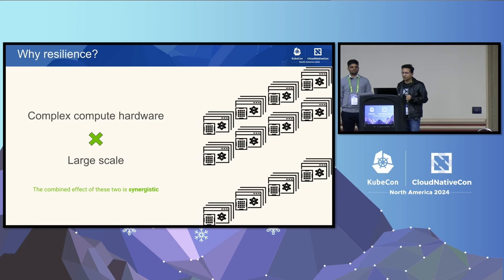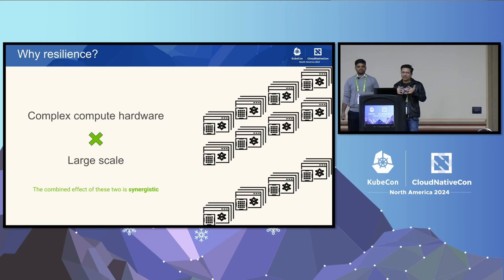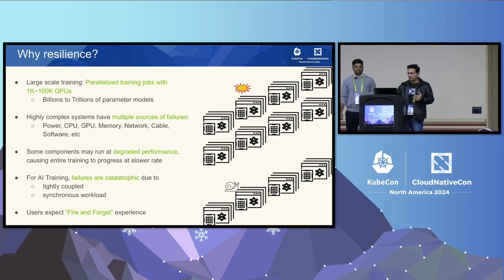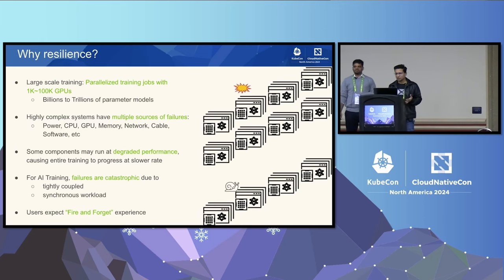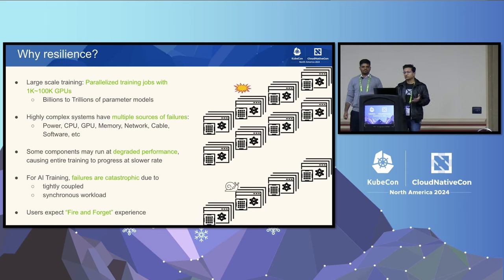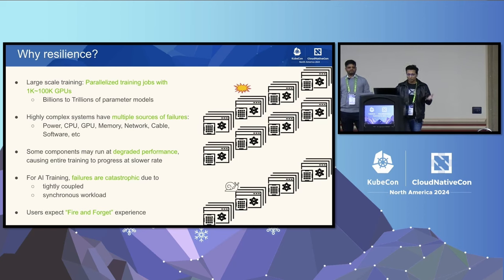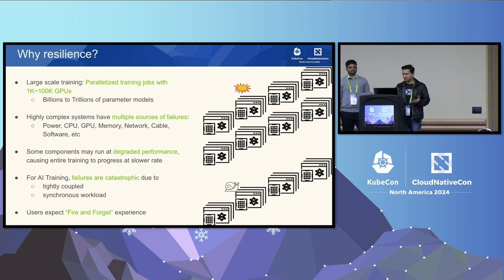When you combine complex hardware with scale, the combined effect is synergistic — compounding rather than additive. At scale, we want to run training of billions and trillions of parameter models. The GPU server is a sophisticated, high-performance piece of equipment, but it comes with its own complexity. There are several sources of failure: power, CPU, GPU, memory, network, cables, software, and data center components like network design and cooling. Moreover, some components may not fail completely — they might just run in a degraded state, making it harder to detect.